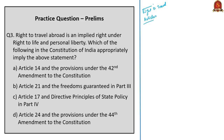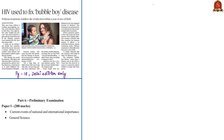For prelims preparation, try to know about the right to travel as an implied right under Article 21 — right to life and personal liberty — and the articles under the Indian Constitution related to this right. Have a look at the practice question. The third news article of the day is 'HIV Used to Fix Bubble Boy Disease,' appearing in page number 18 of the Delhi edition only.